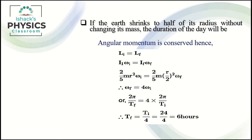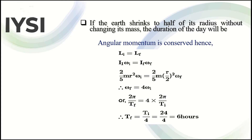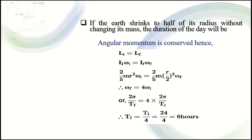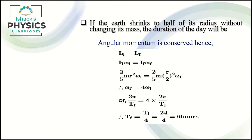For rotational motion, the angular momentum is L equal to I omega, analogous to linear momentum P equal to MV. So we write the conservation equation as I₁ omega_i equal to I_F omega_F.